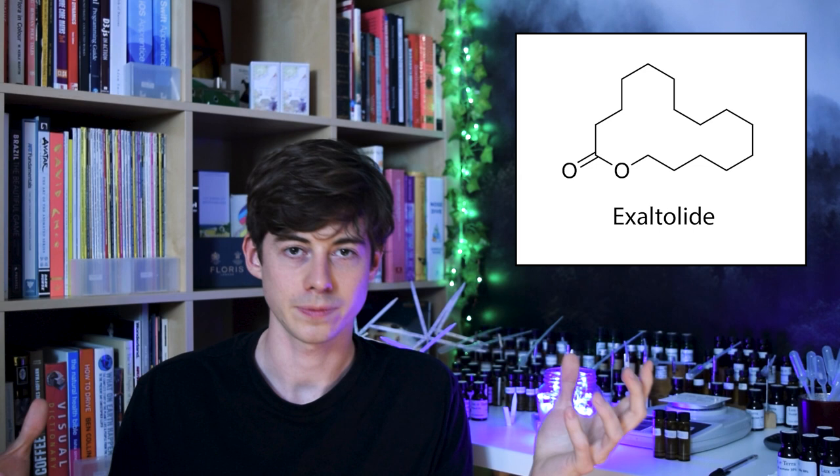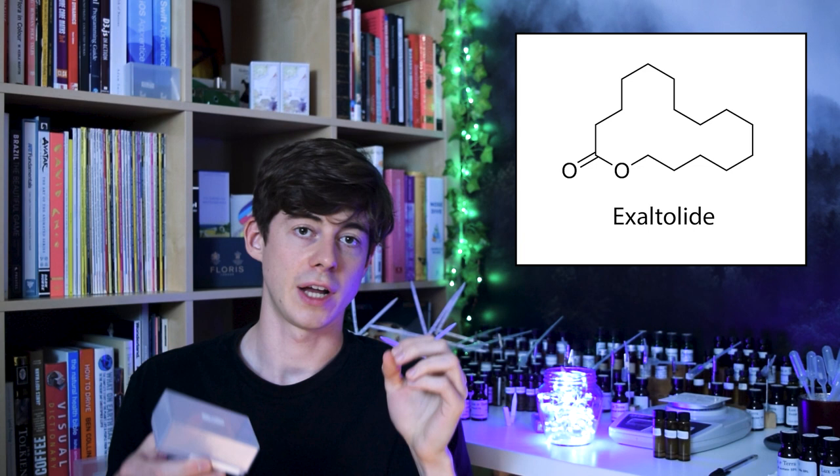Chemists started discovering macrocyclic musk molecules in the 1920s, and by the 1930s were developing processes to produce them on an industrial scale. Since then, competing groups of chemists have worked to find more efficient methods of synthesizing these macrocyclic musks, reducing waste and most importantly driving down the cost of producing them. I've got a couple of these macrocyclic musks here — let's start with exaltilide, which is naturally found in angelica root oil and in the civet cat.